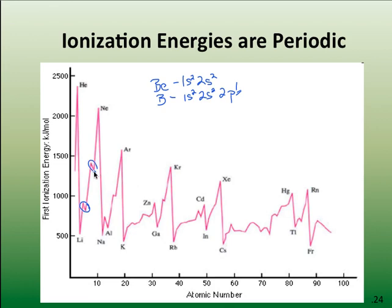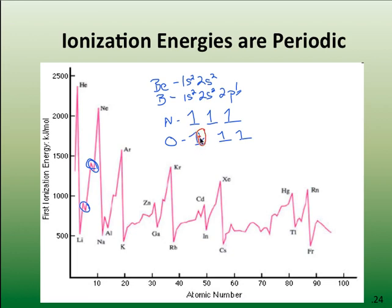The second discrepancy is between nitrogen, which has three electrons in the p sublevel all with the same magnetic spin, and oxygen which has four electrons in that sublevel. The fourth electron being paired in an orbital with another electron has some slight repulsive forces, making it easier to remove than the relative stability of three electrons in three p orbitals all with the same magnetic spin.